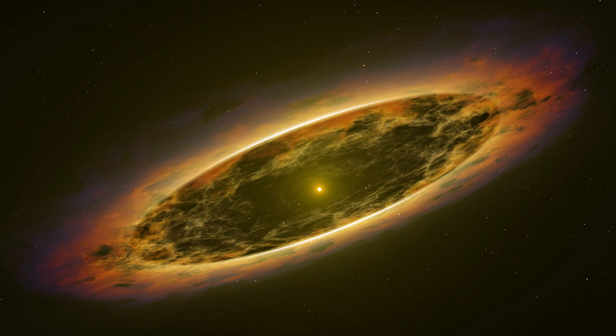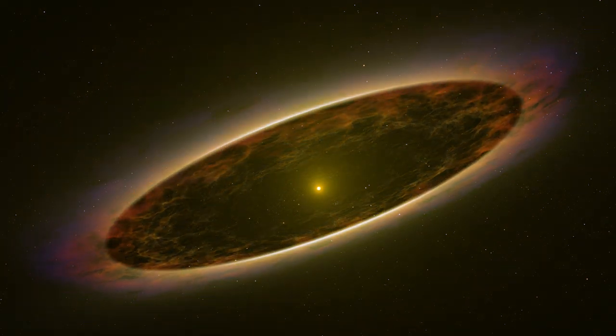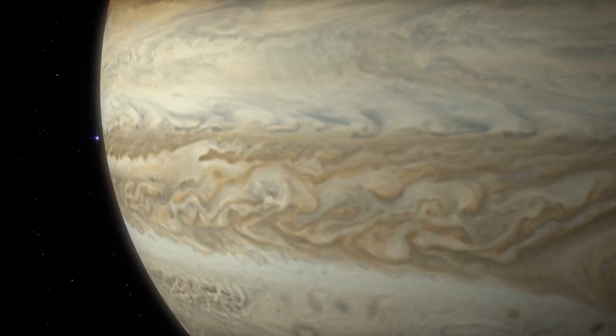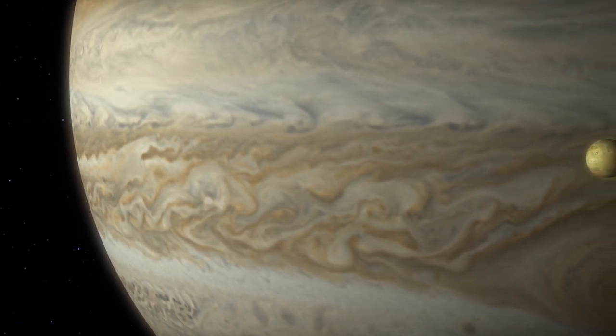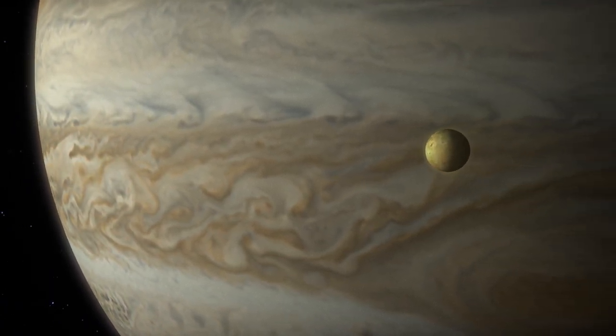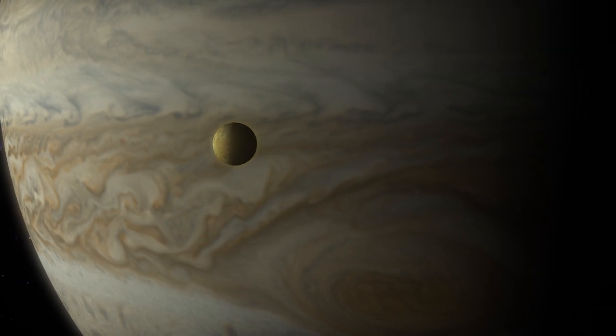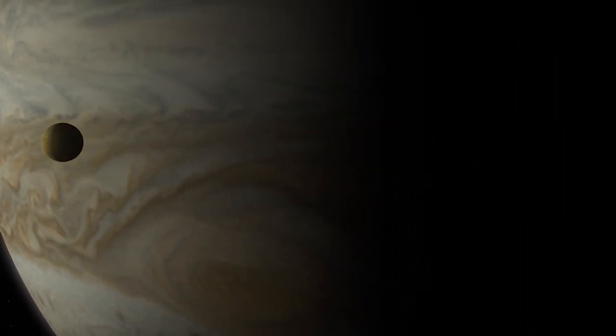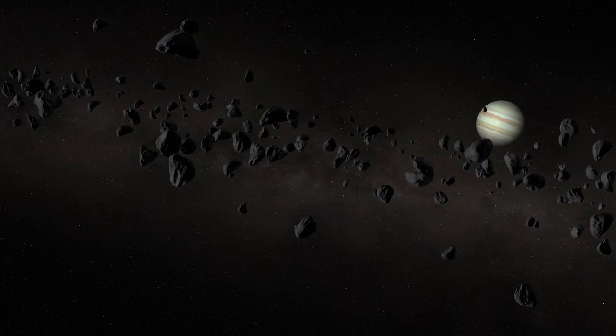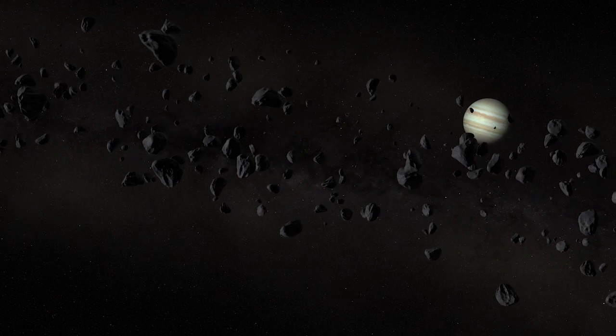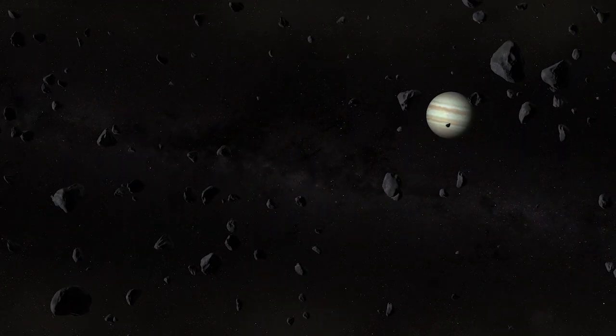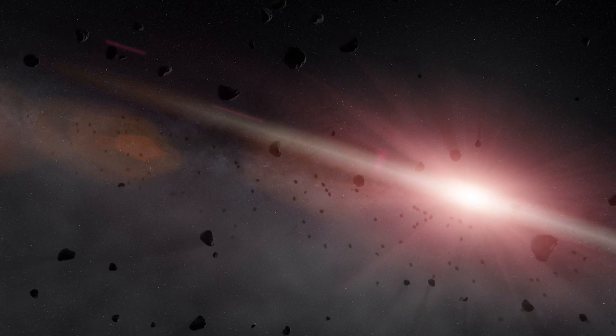But the solar system is far from finished. Jupiter most likely forms near its outer edge. But just 500 million years after the sun ignites, some believe that it slowly moves inward. Its massive gravity ripples the asteroid belt, disrupting countless asteroids and comets, bringing them toward the sun.